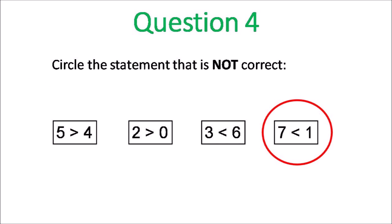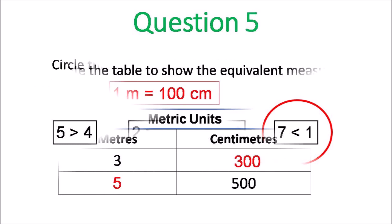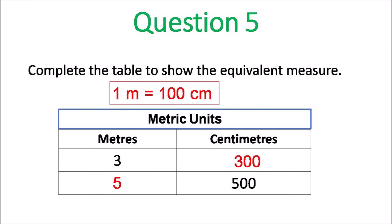The one where it points to a higher number, so 7 is less than 1, that's not true. 1 meter is 100 cm, so 3 is 300 cm. And 500 cm is 5.